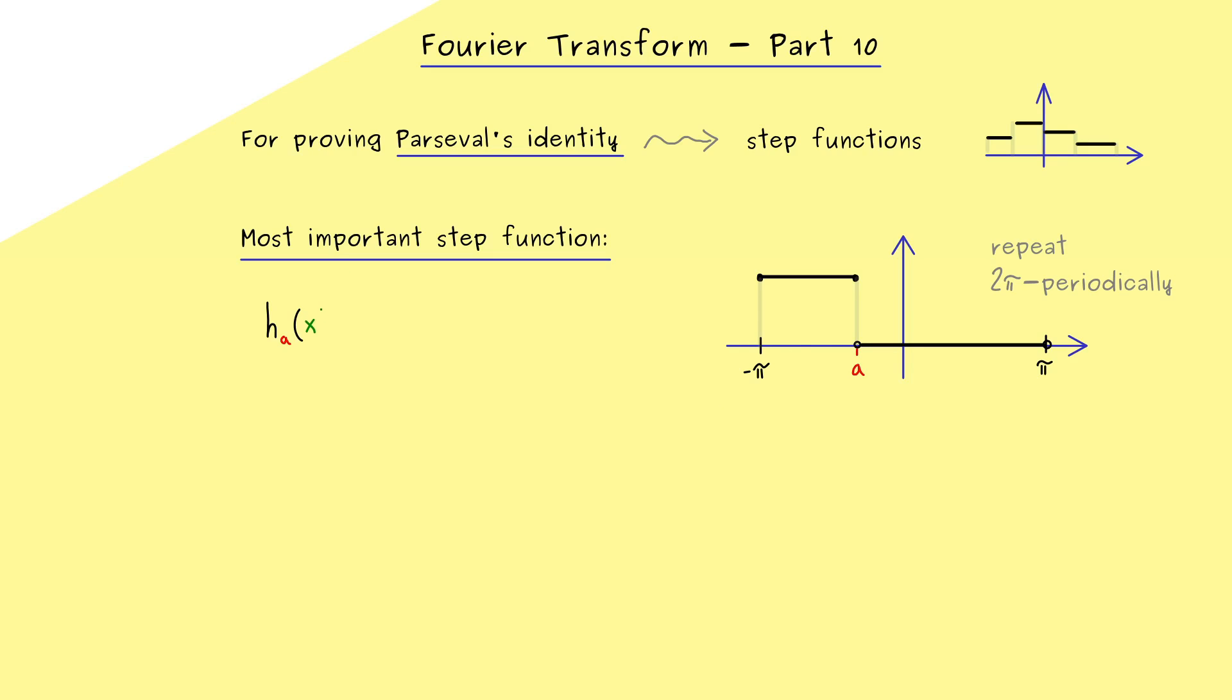Of course for that we need a 2π periodic function, which is not a problem, because we can just repeat this picture again and again. And in addition we should also write down the formal definition of this function. And let's call it h with index a. And there you might already guess, that a should be exactly this x value for the jump. Ok, so what we have is h_a of x is equal to 1 or 0 depending in which interval x lies. More precisely we have 1 if x lies in the interval minus π to a, and we have 0 if x lies in the open interval a to π.